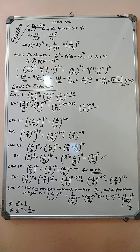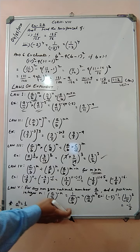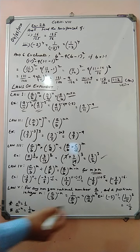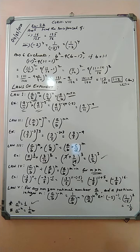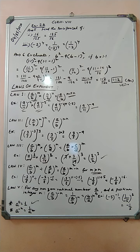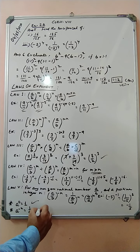Law 5: For any non-zero rational number (a by b) and a positive integer n, (a by b) to the power minus n equals 1 by (a by b) to the power n, which equals (b by a) to the power n — it simply reciprocates. Example: minus 5 to the power minus 1 equals 1 by minus 5 to the power 1, which equals minus 1 by 5. Also remember: anything to the power 0 is 1, so a to the power 0 equals 1. And a to the power minus n equals 1 by a to the power n.